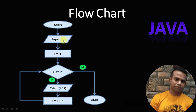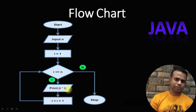Looking at the flowchart: the program starts, takes input n from the user — how many numbers they want in the series — then we initialize i with 1. If i is less than or equal to n, we print i squared, then increment i by 1, and loop back to check the condition again. When the condition becomes false, we exit the loop.